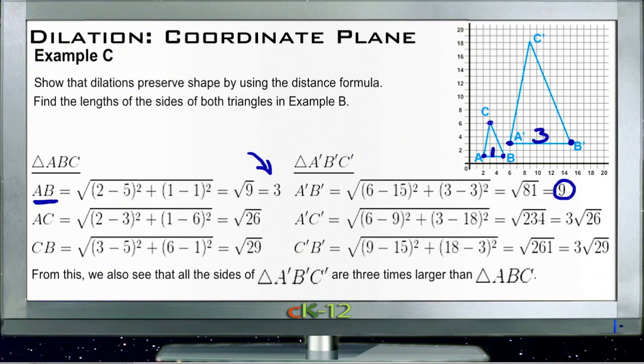And then the final side is square root of 29 and 3 square roots of 29, so yes, obviously that does compute. The bigger figure has lines that are exactly three times as long as the original figure.